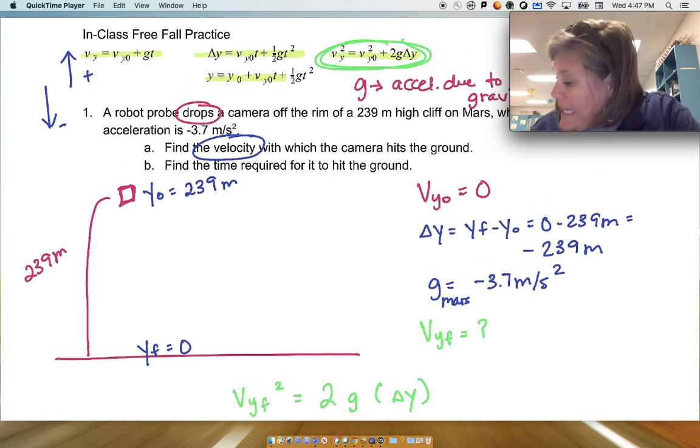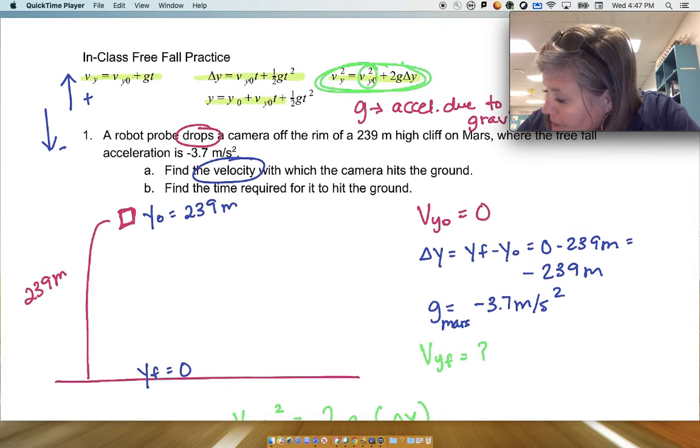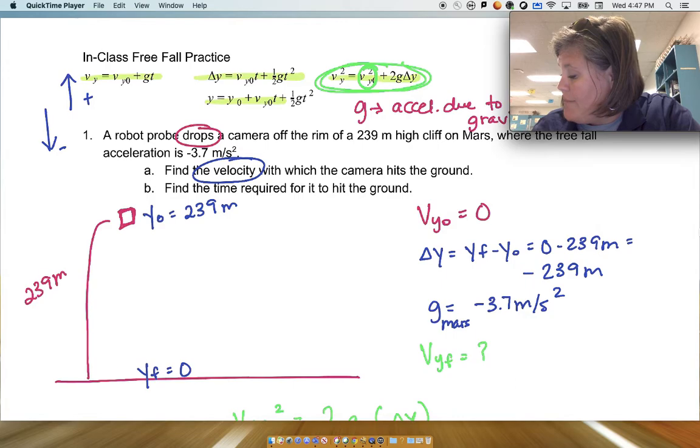So let's just go ahead and erase that. That's zero. So this will be VYF squared equals 2G delta Y. Again, that initial vertical velocity here is zero. Makes it a little easier.